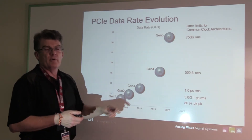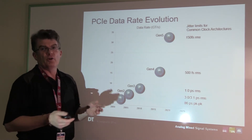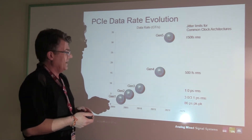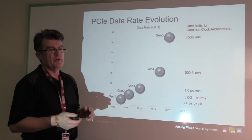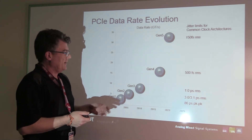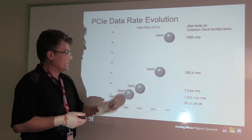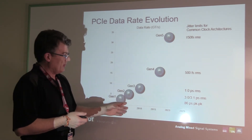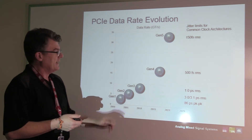With Gen 3 they went to a polynomial approach to error correction and a much longer coding structure to get an actual 8 gigabit data rate for Gen 3. So in reality, the data throughput did double from 5 gig at Gen 2 to 8 gig at Gen 3.